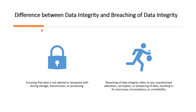In this slide we will discuss the difference between data integrity and breaching of data integrity. Sometimes people think that data integrity is a negative term. Actually, data integrity means maintaining the integrity of data. What we should avoid is breaching of data integrity — that means there should not be any falsification, inaccuracy, or inconsistency in the data. Data integrity ensures that data is not altered or tampered with during storage, transmission, or processing. Breaching of data integrity refers to any unauthorized alteration, corruption, or tampering of data resulting in inaccuracy, inconsistency, or unreliability.